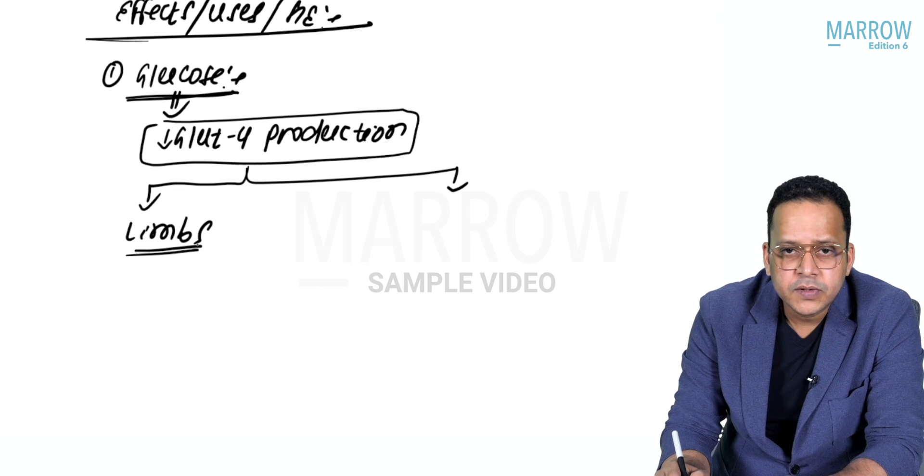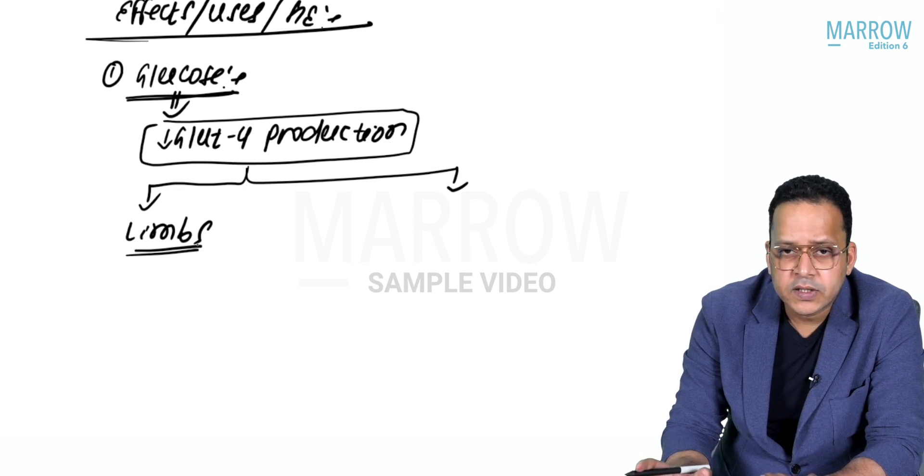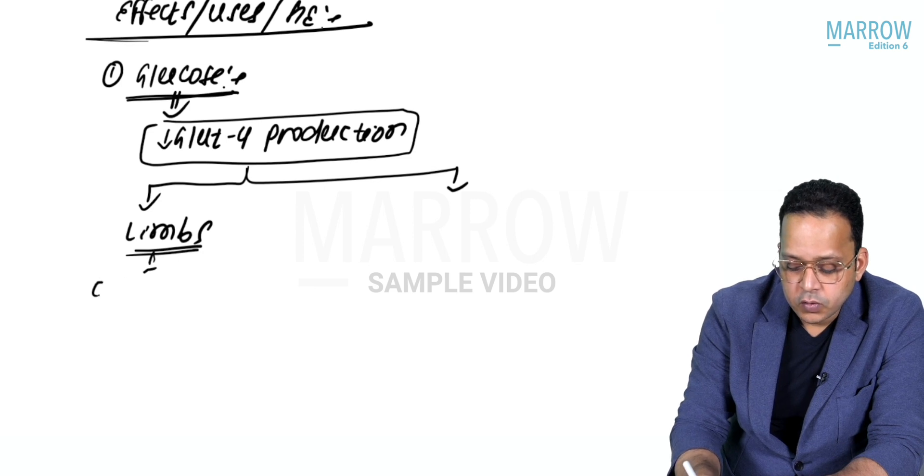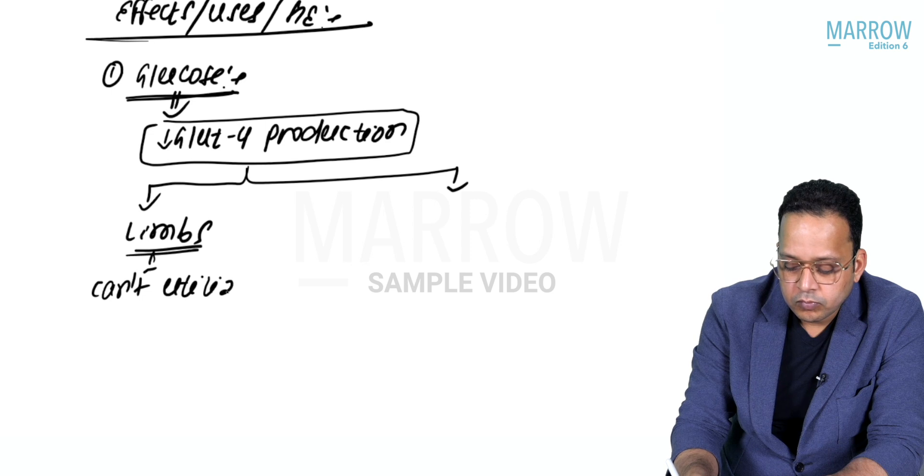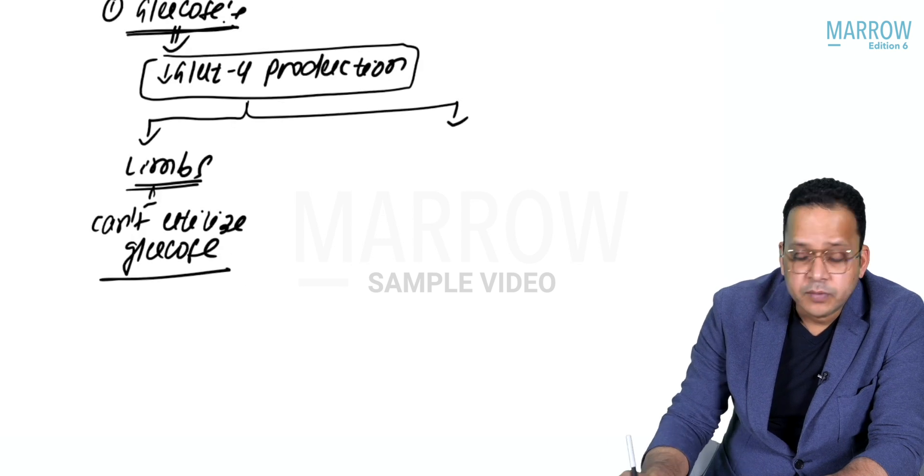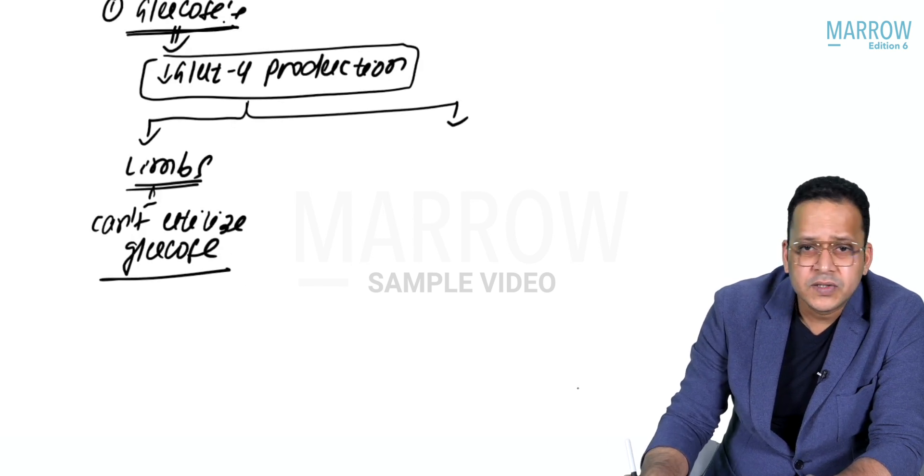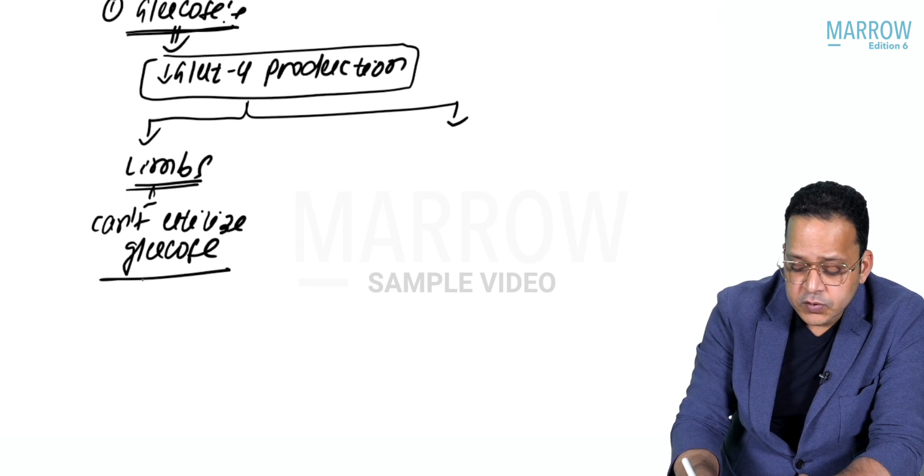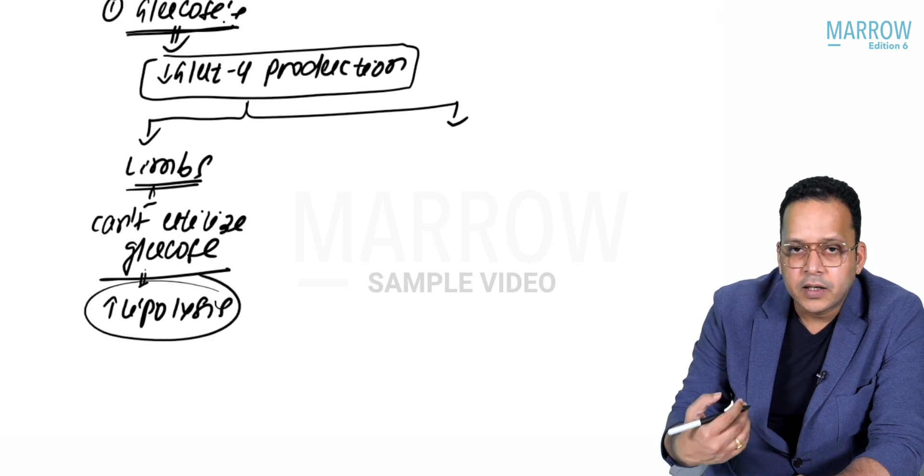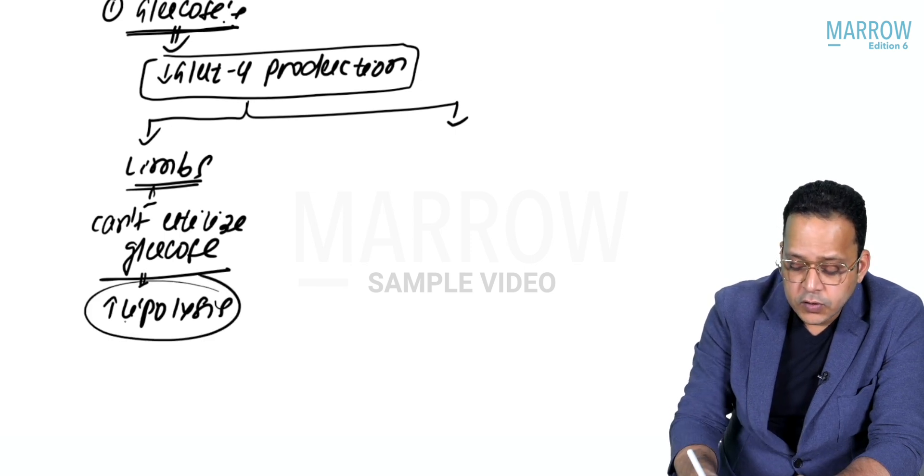In my limbs, if GLUT4 production decreases, they cannot utilize glucose. My limbs - skeletal muscles need GLUT4, and this is why there is increased lipolysis. All the fat in the limbs is gone, so limbs become thin because of lipolysis.